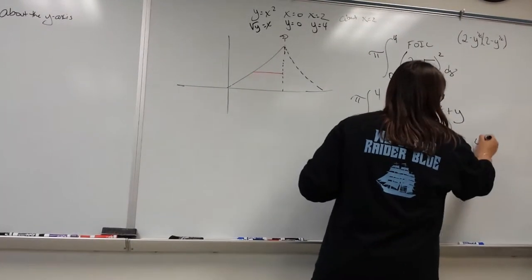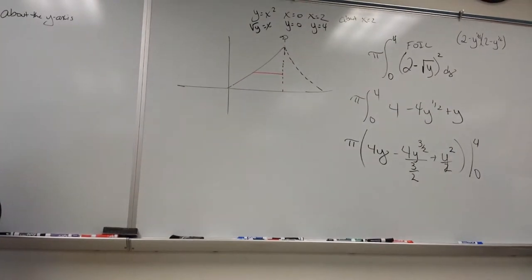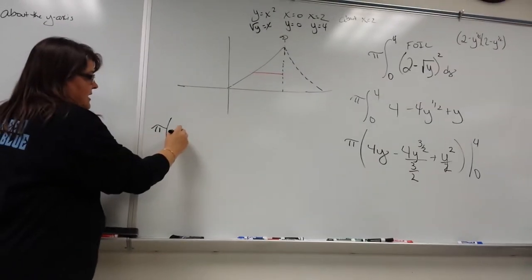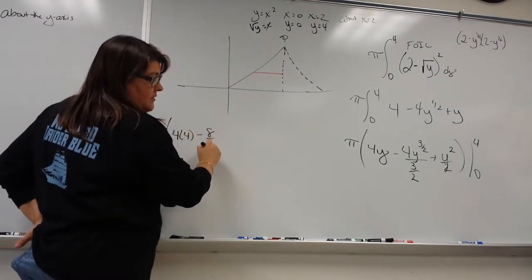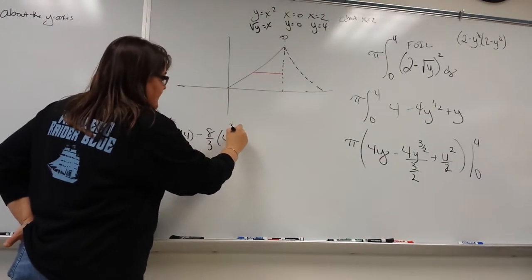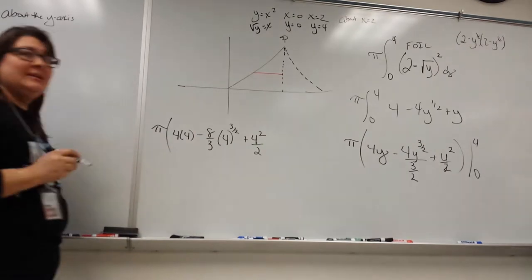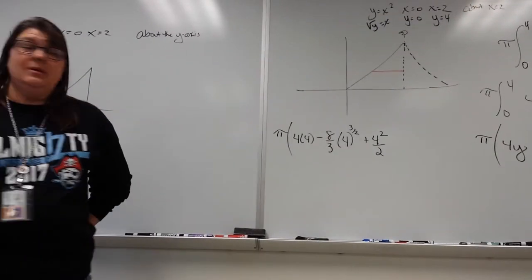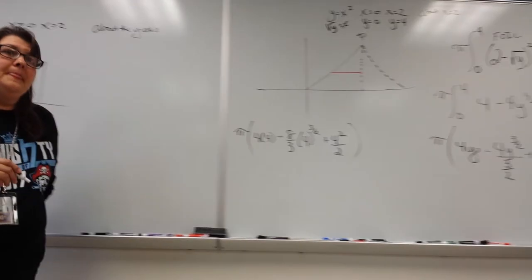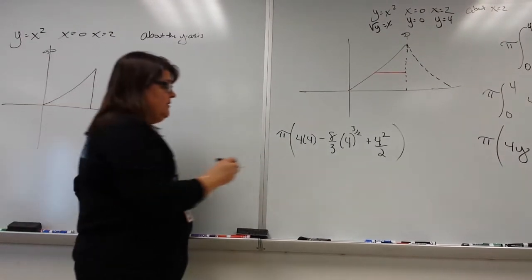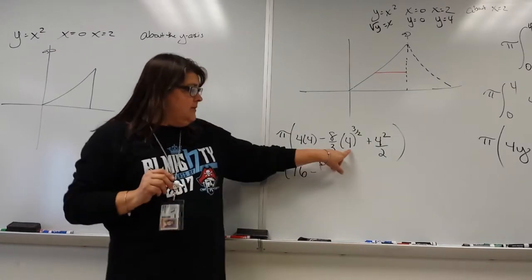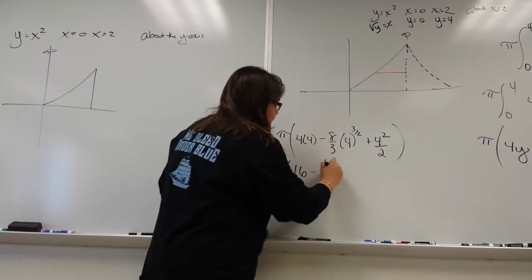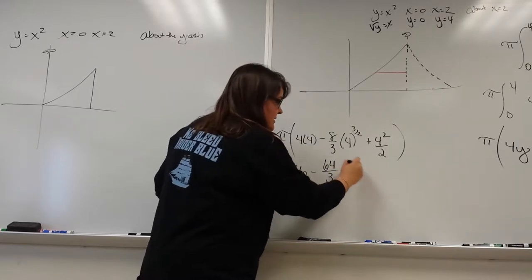We're going to assess it from zero to four. When we plug in the four — pi goes for the ride — I'm going to get four times four minus eight-thirds, and then four to the three-halves, plus four squared over two. Now look at the zero: what does zero do to it? It makes everything zero, so it's just minus zero. The square root of four is two; two to the third is eight; times eight is sixty-four over three. Plus sixteen over two is eight.